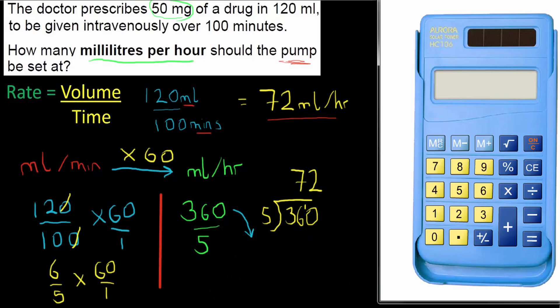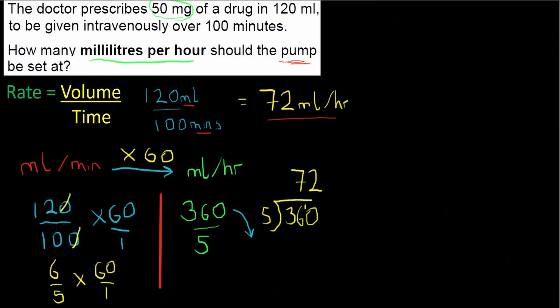Let's check with a calculator. We do 120 divided by 100, multiplied by 60 divided by 1. The answer is indeed 72 millilitres per hour. It's very important to realise that with the calculator it wasn't the original formula I was putting in, but this adjusted formula — that's the important part.